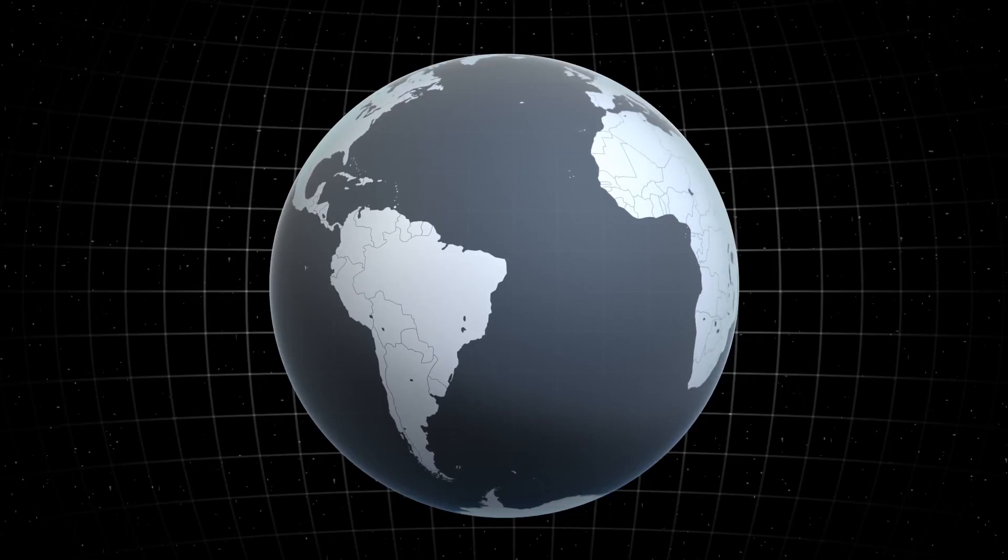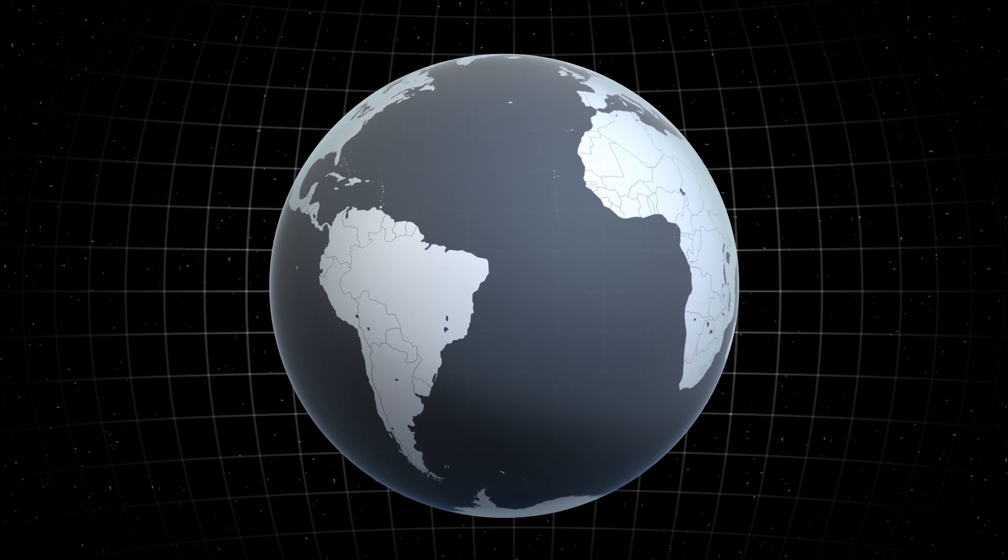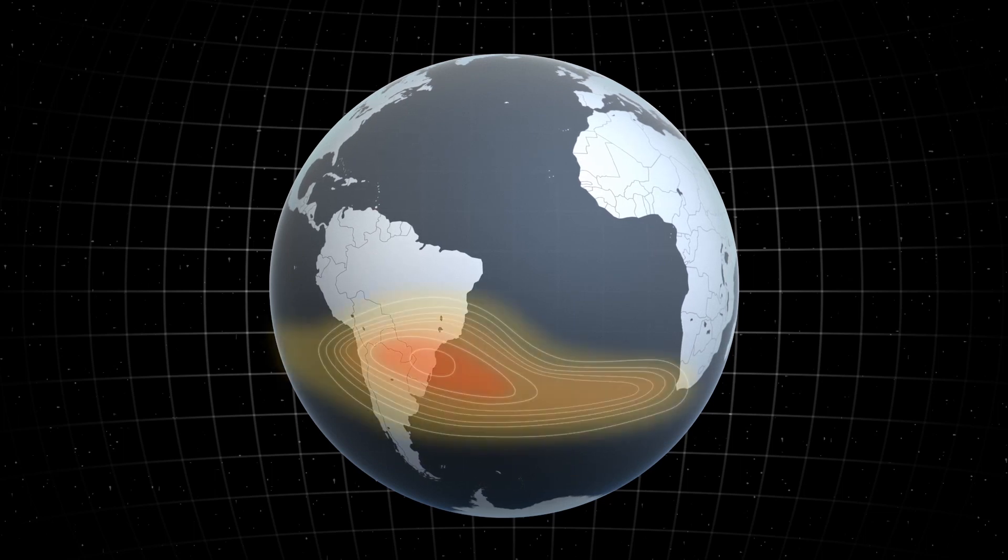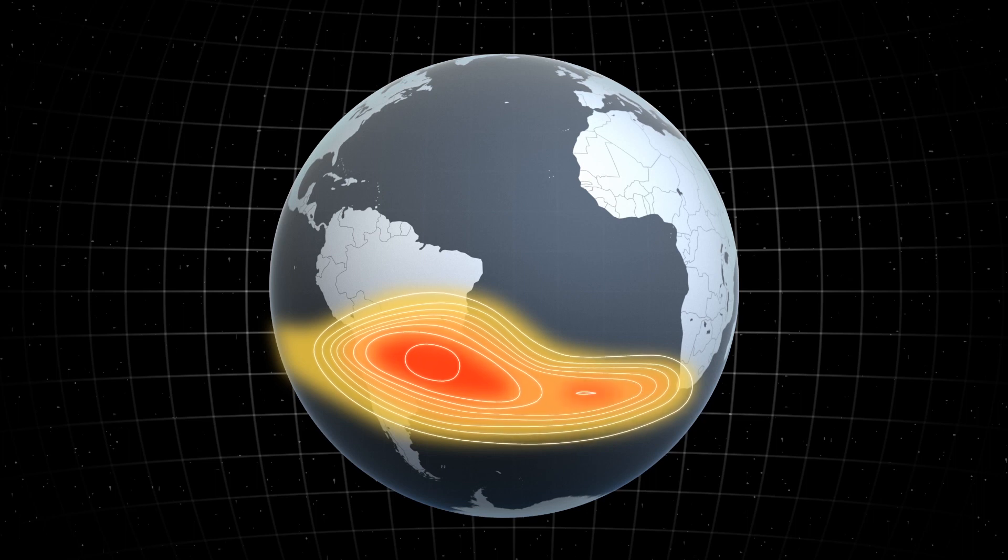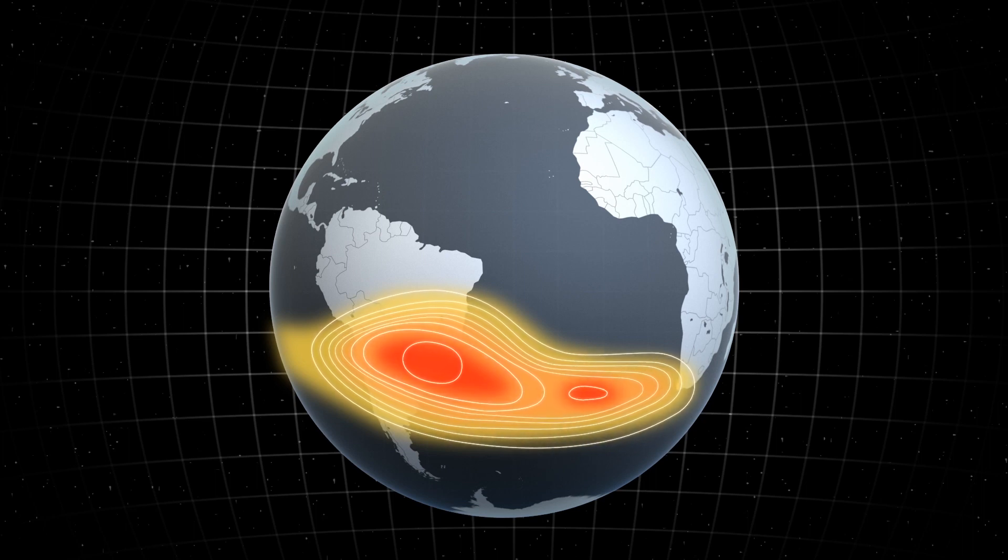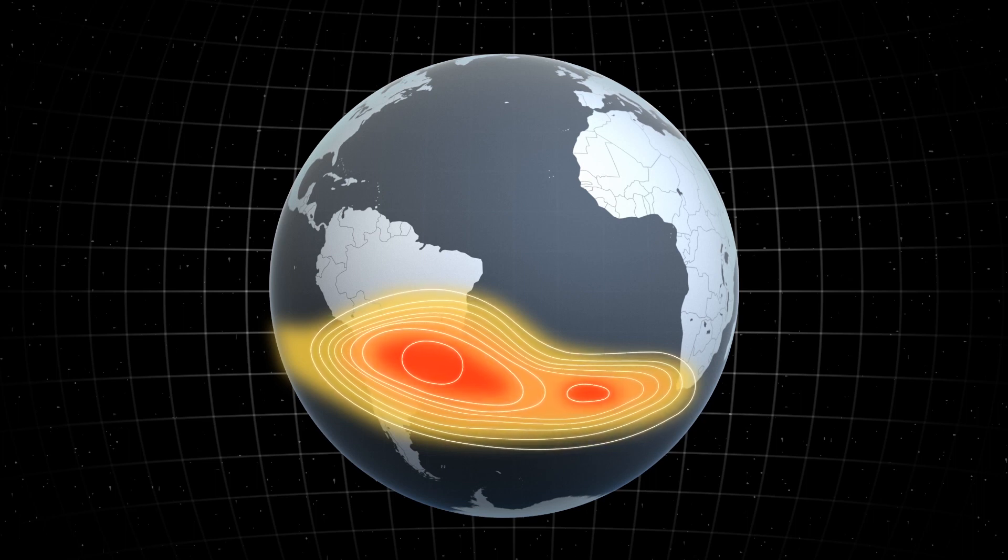New data from the European Space Agency's Swarm constellation of satellites show that a weak spot in the Earth's magnetic field known as the South Atlantic Anomaly has been growing in size since 1970 and may possibly be developing a second cell centered above the coast of southwest Africa.